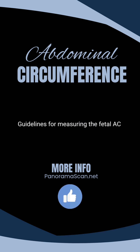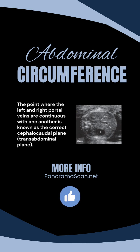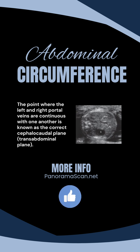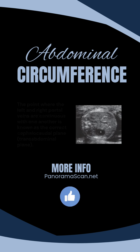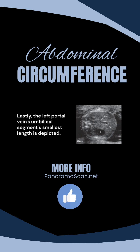Let's understand the guidelines for measuring the fetal abdominal circumference. The correct cephalocaudal plane, also known as the transabdominal plane, is the point where the left and right portal veins are continuous with one another. Second, the lower ribs have a symmetrical orientation. Lastly, the smallest length of the left portal vein's umbilical segment is depicted.